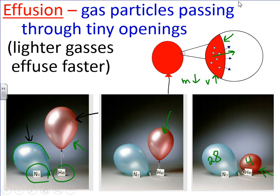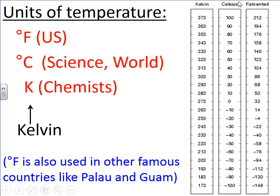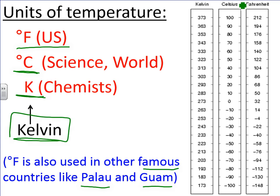Let's talk about actual units of temperature. There are three units we usually discuss: degrees Fahrenheit, which the public uses in the United States; degrees Celsius, which most of the world uses; and Kelvin, which we will be using in chemistry. Kelvin is the unit of choice for us because it is what's called an absolute scale — meaning there are no negative values, whereas the other scales do have negative values.